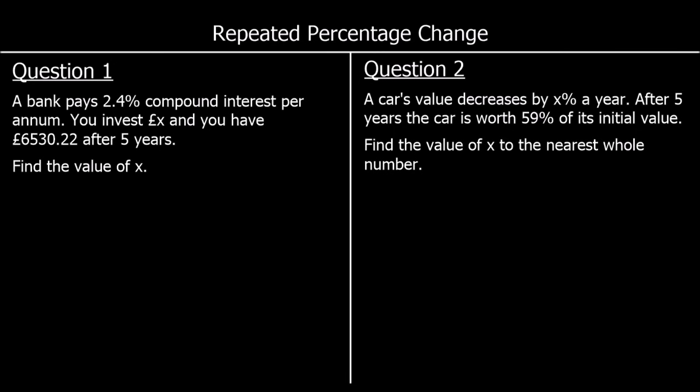Question 1. A bank pays 2.4% compound interest per annum. We invest X and after five years we've got £6,530.22. Find X. So this is what we're investing, X. We get 2.4% compound interest per year. The multiplier is 1.024 — so 102.4% as a decimal. And it's for five years, so to the power of five, and it equals £6,530.22.